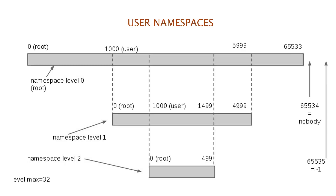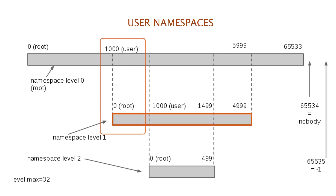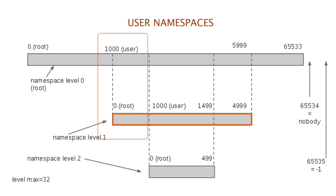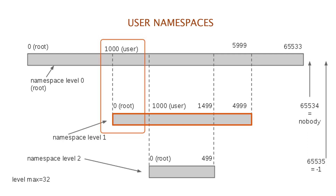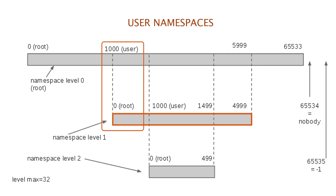User namespaces isolate the user and group ID number spaces. In other words, a process's user and group IDs can be different inside and outside a user namespace. The most interesting case is that a process can have a normal unprivileged user ID outside a user namespace while at the same time having a user ID of 0 inside the namespace. This means that the process has full root privileges for operations inside the user namespace, but is unprivileged for operations outside the namespace.